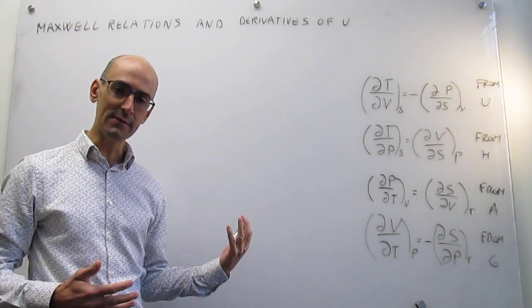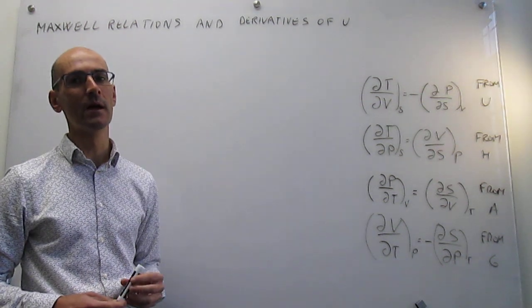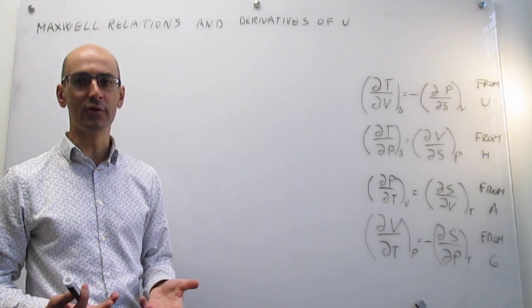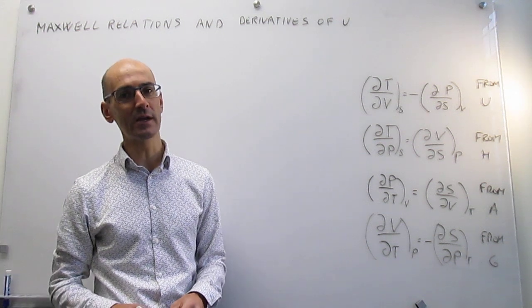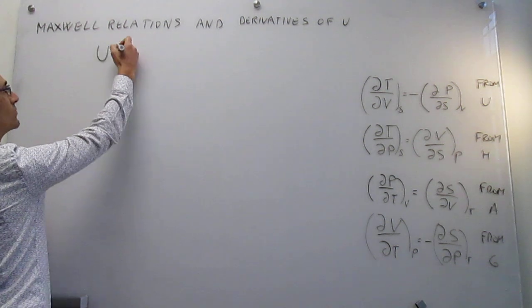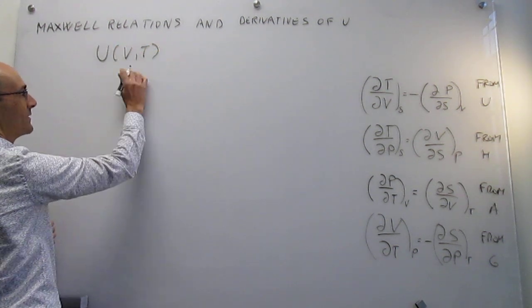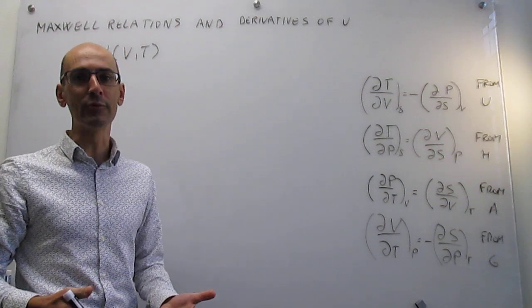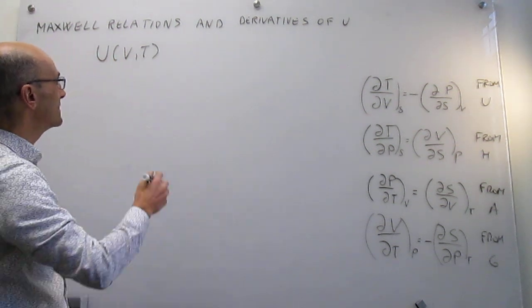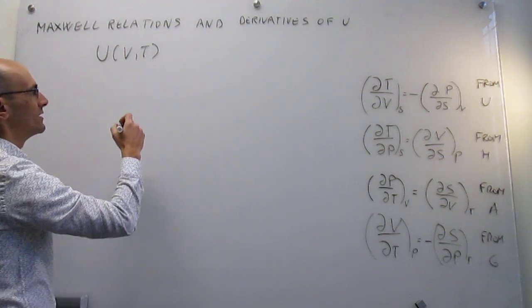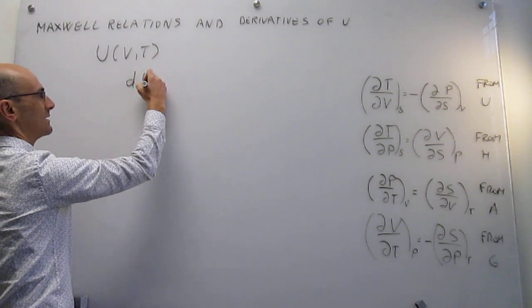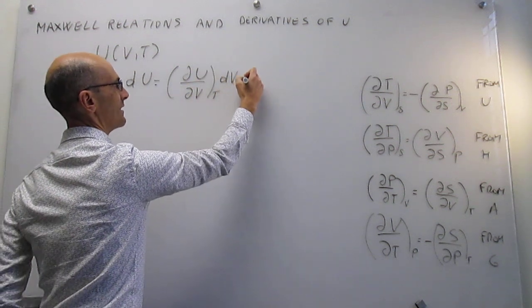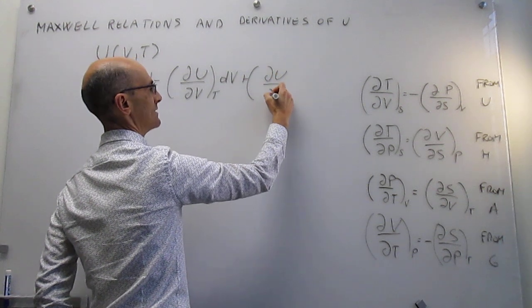So in this first video, this series of applications of Maxwell relations, we are going to try to see how the internal energy can be expressed as a function of easy-to-control variables. We actually have seen that for the internal energy, it's very convenient to express it as a function of volume and temperature. When you express this internal energy as a function of volume and temperature, then the total derivative looks like this. You will have a partial derivative with respect to volume at constant temperature, and you will also have a partial derivative with respect to temperature at constant volume.